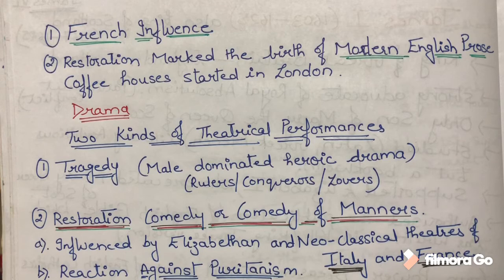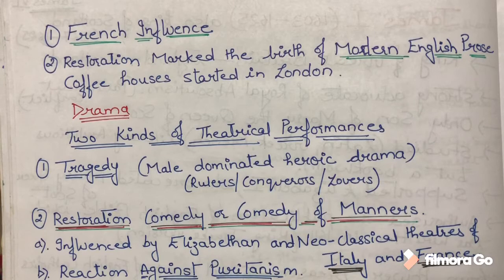Second, the Restoration Age marked the birth of modern English prose. Why? Because at this time there were coffee houses in London where many people would come, drink coffee, and discuss various topics. Since you cannot discuss topics through poetry or drama alone, the English prose developed here.